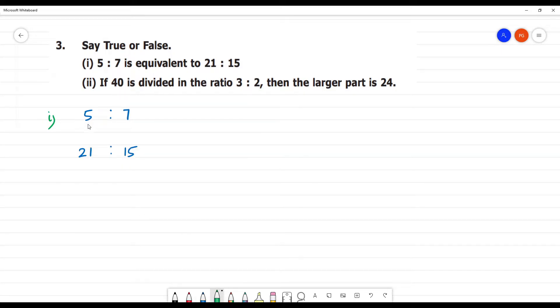So number 5 here is 21. 7 here is 21, 15. So this is 2. Let's say 5 into 3. 5 into 3 is 15. 7 into 3 is 21.